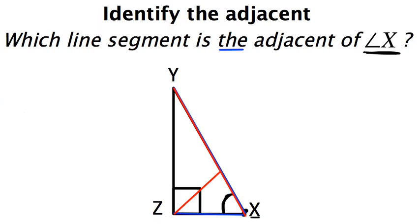So that leaves only one side possible, and that's this one which I'll put in green. So we call line segment XZ. That is the adjacent side to angle X.